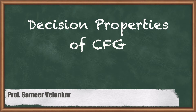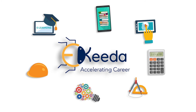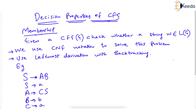Hello dear students, let's come back to decision properties of CFG. In the previous video I explained what decision properties mean. One of those decision properties was the membership problem. Suppose we are given some context-free grammar G, and we want to check whether some string W belongs to the language generated by that grammar or not.